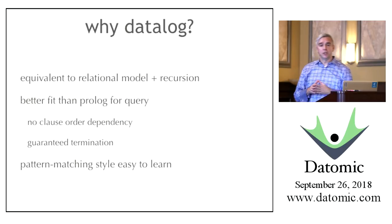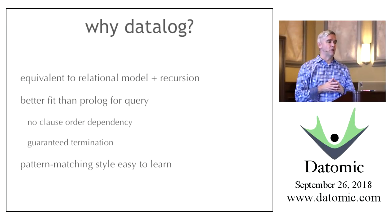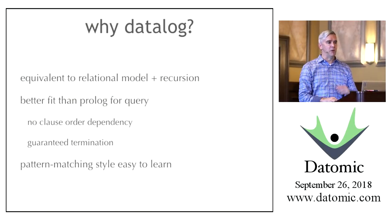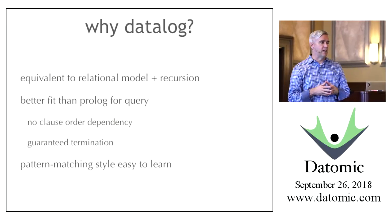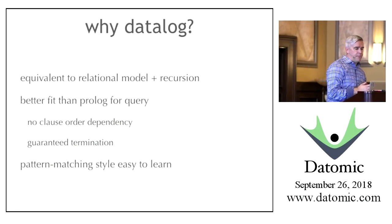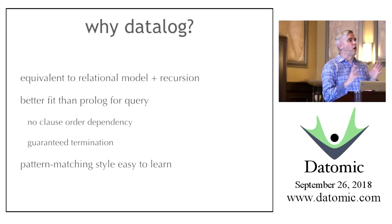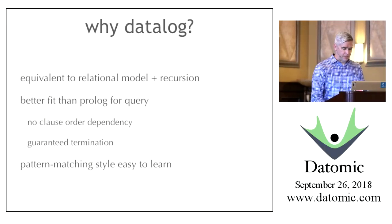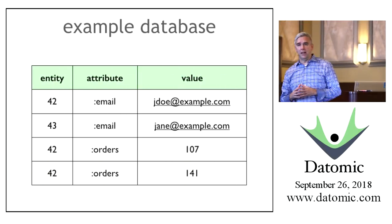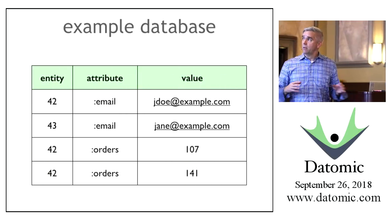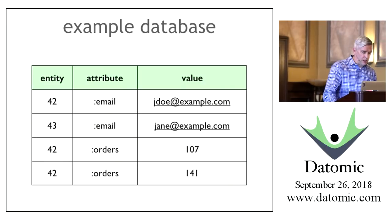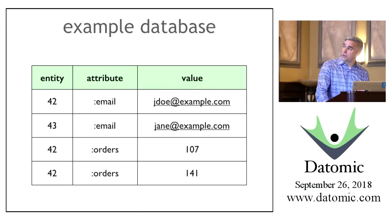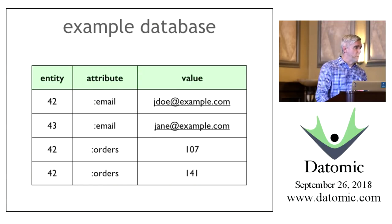If you took Prolog in college, you may remember it was really cool until you had to start putting in cuts to control order and ensure termination. Datalog was designed to be guaranteed to terminate. The style of Datalog is pattern matching. Our example database has four datums: entity 42 whose email is jdoe, entity 43 whose email is jane, entity 42 whose orders is 107, and entity 42 whose orders is also 141.